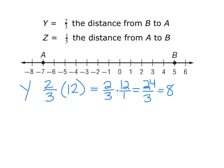Starting at point B, I'm going to count eight units: one, two, three, four, five, six, seven, eight. So the location of Y would be at negative three.